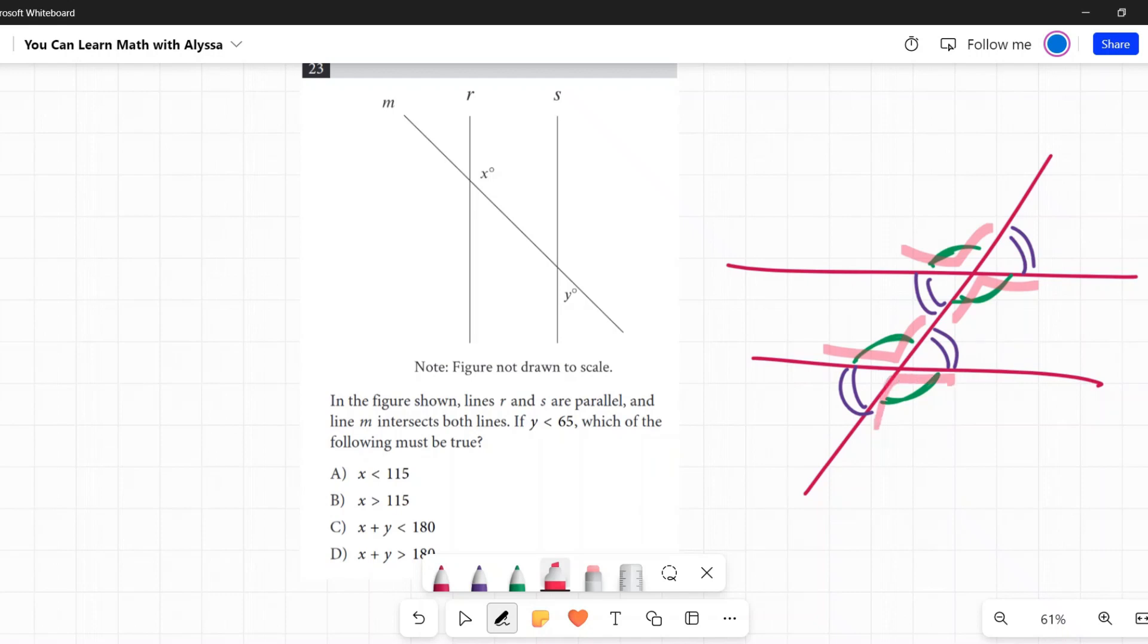The green angles and these purple-blue angles are going to be supplementary—that is, they're going to add up to 180 degrees. You can see it when they're right next to each other, but because they're the same across, it would mean that this and this is supplementary. So that's the knowledge they're testing you on.